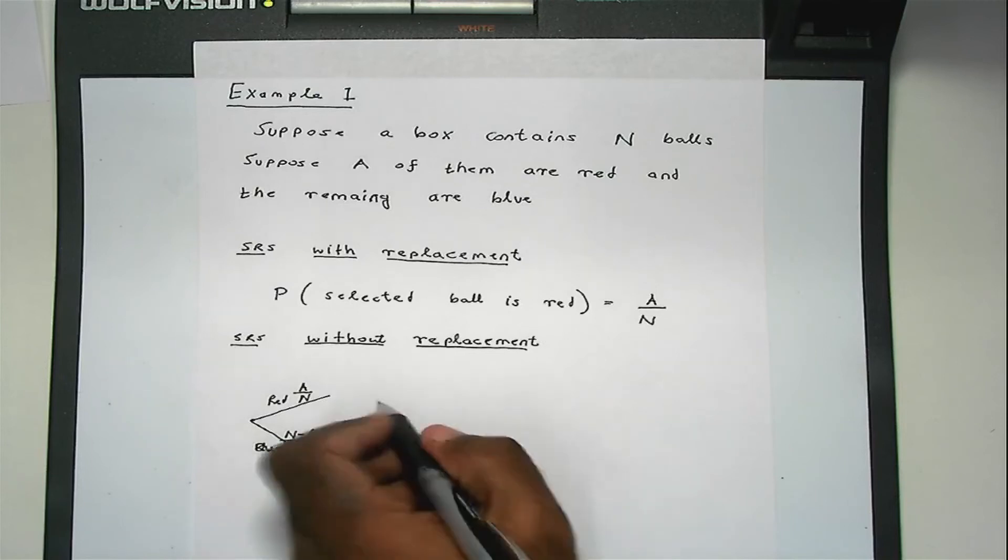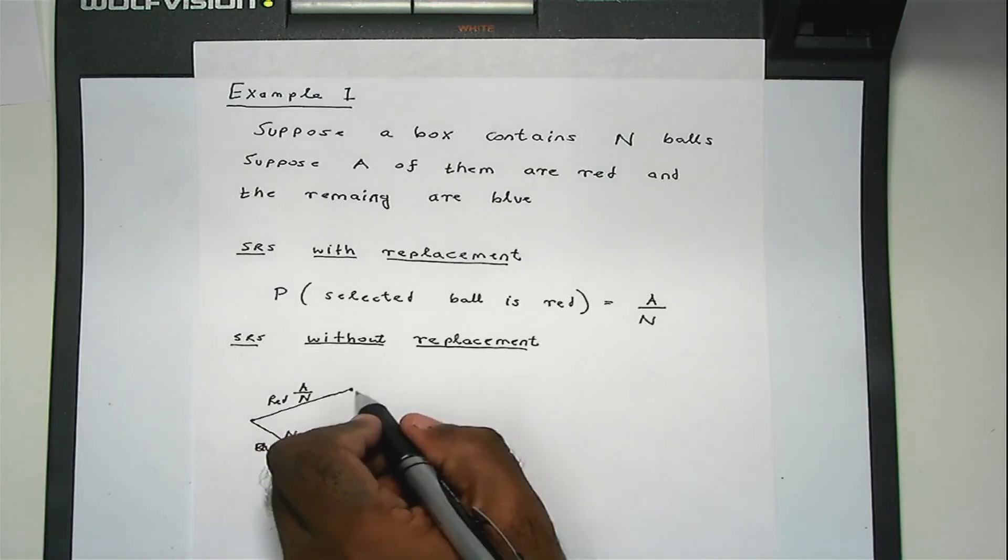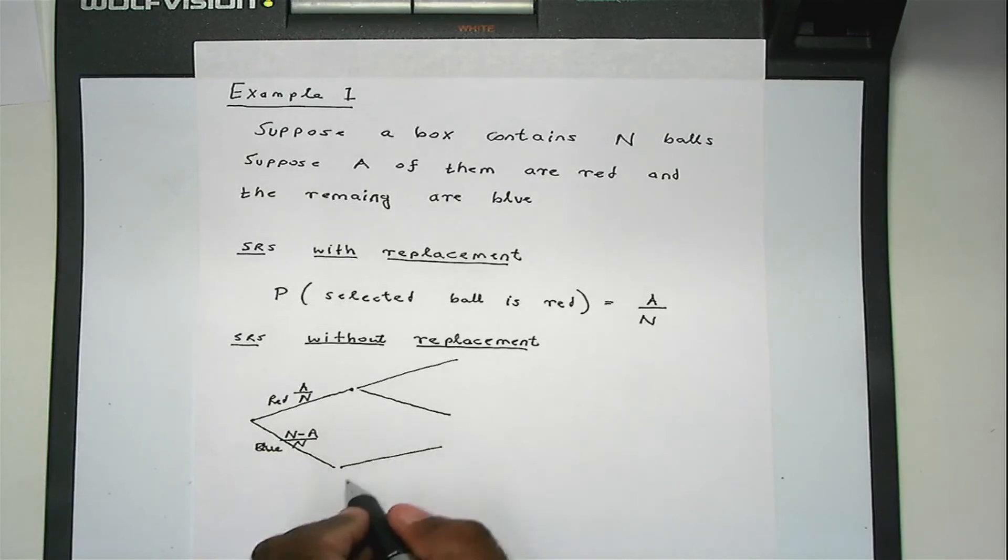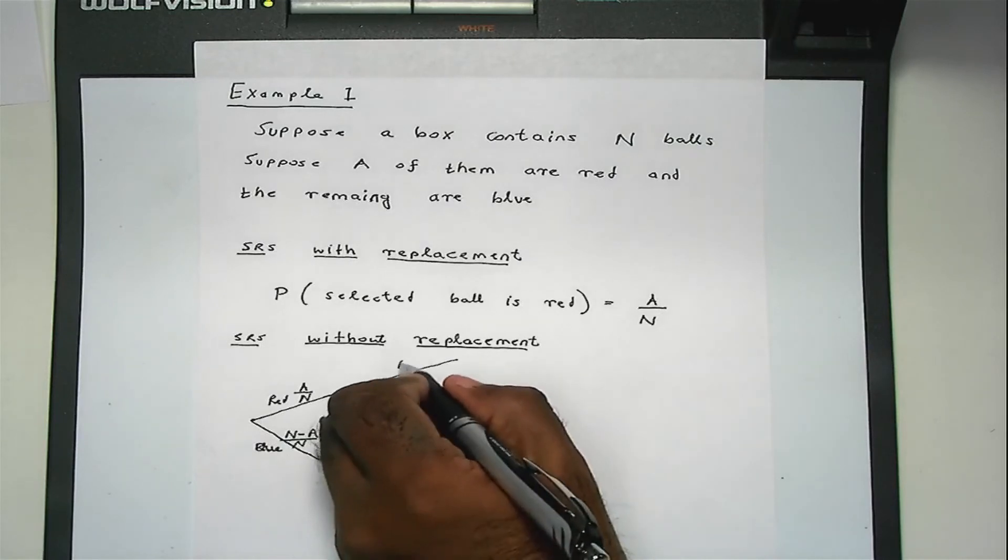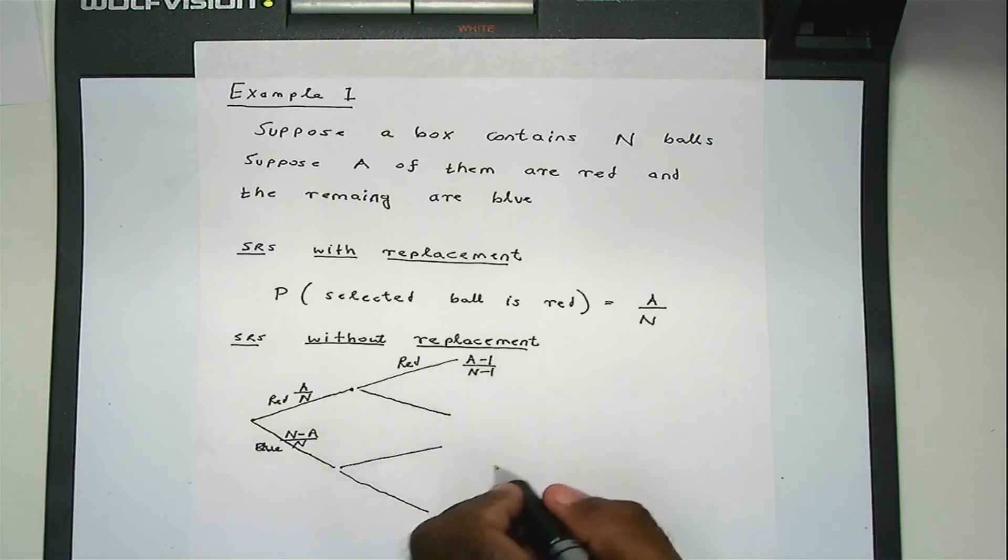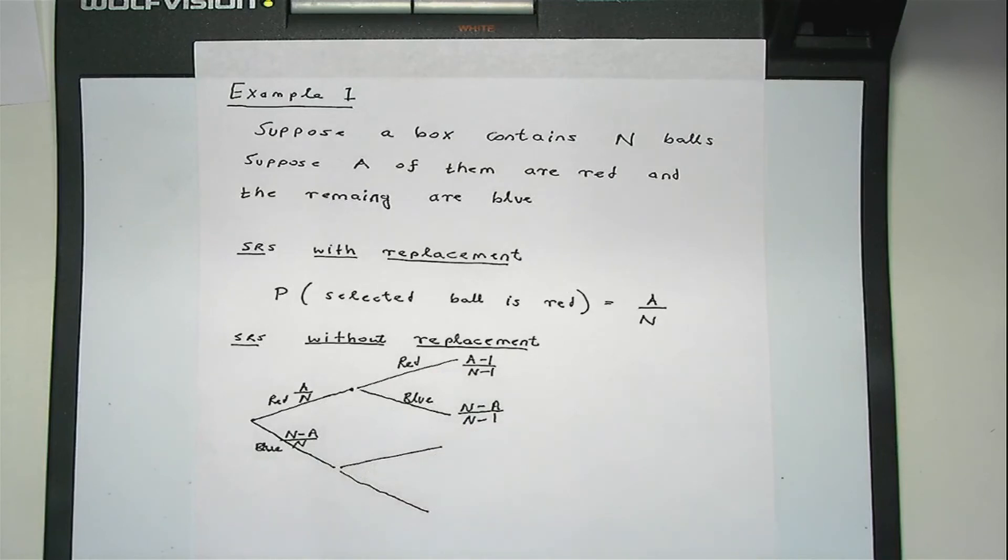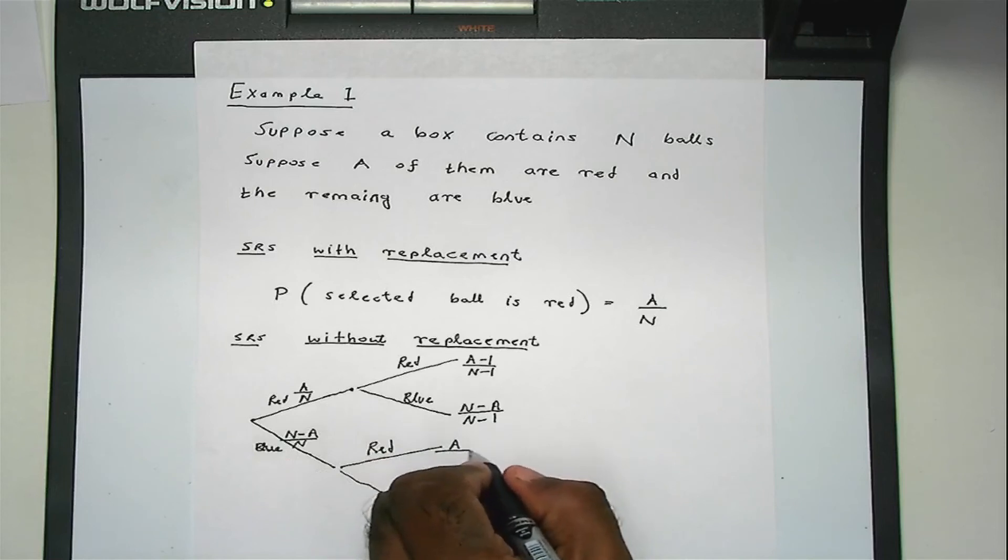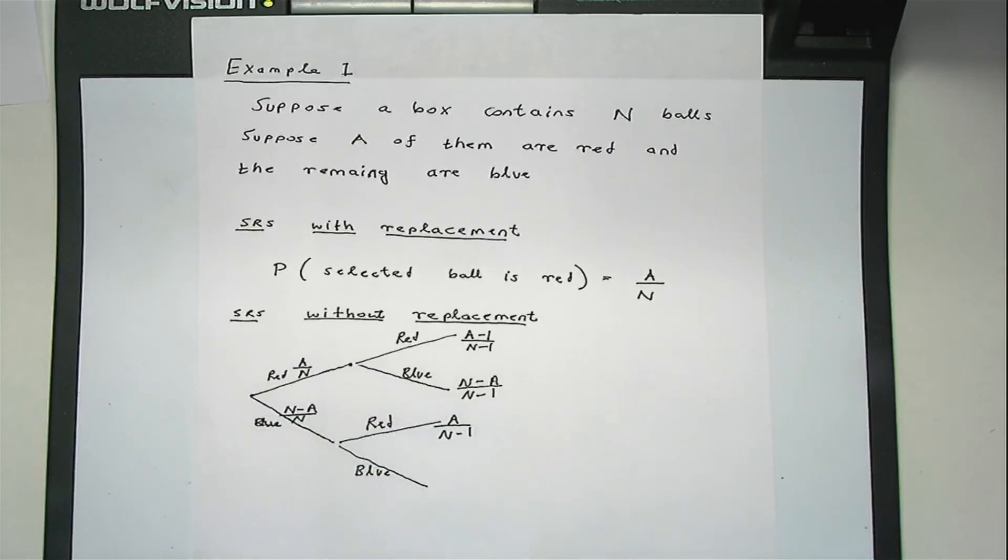And the second time you select, it can again be red or blue. So the probability that it will be red is A minus 1 divided by N minus 1. The probability that it will be blue will be N minus A divided by N minus 1. That's for the first branch. For the second branch, the probability it will be red is A divided by N minus 1, and the probability that it will be blue will be N minus A minus 1 divided by N minus 1.